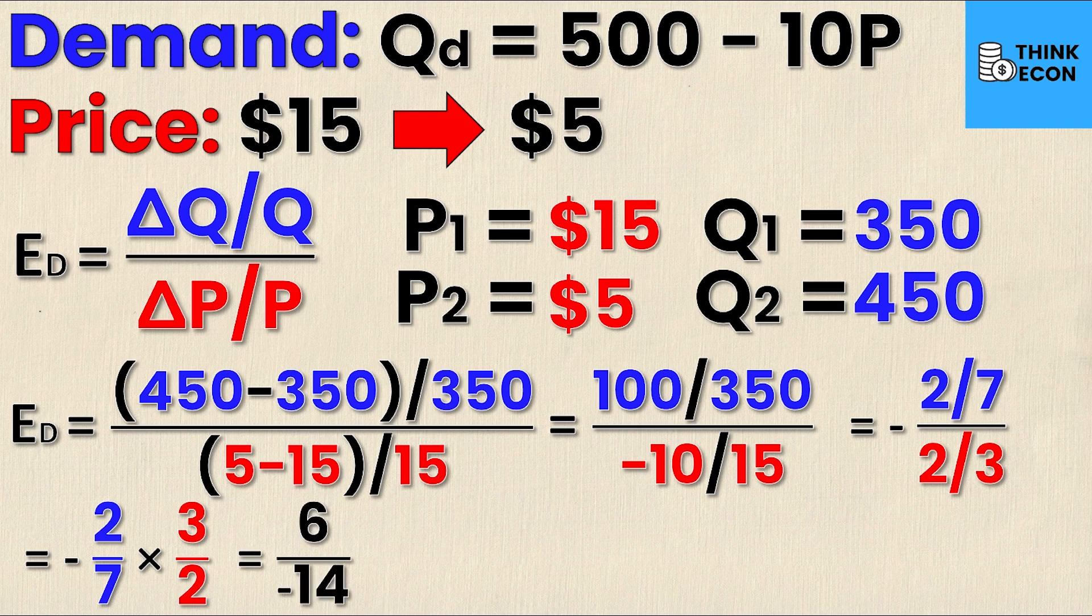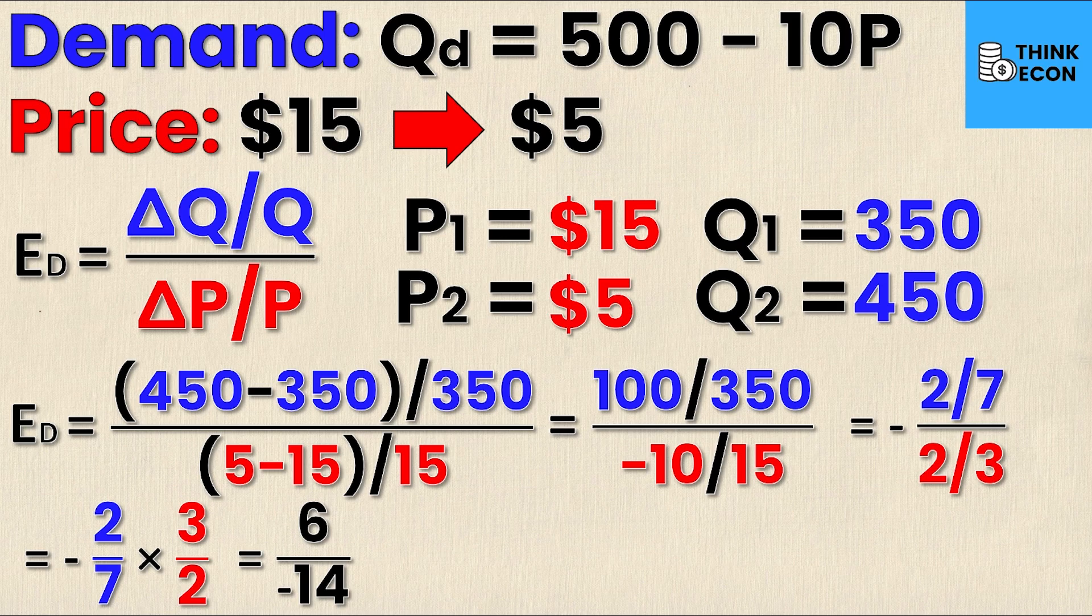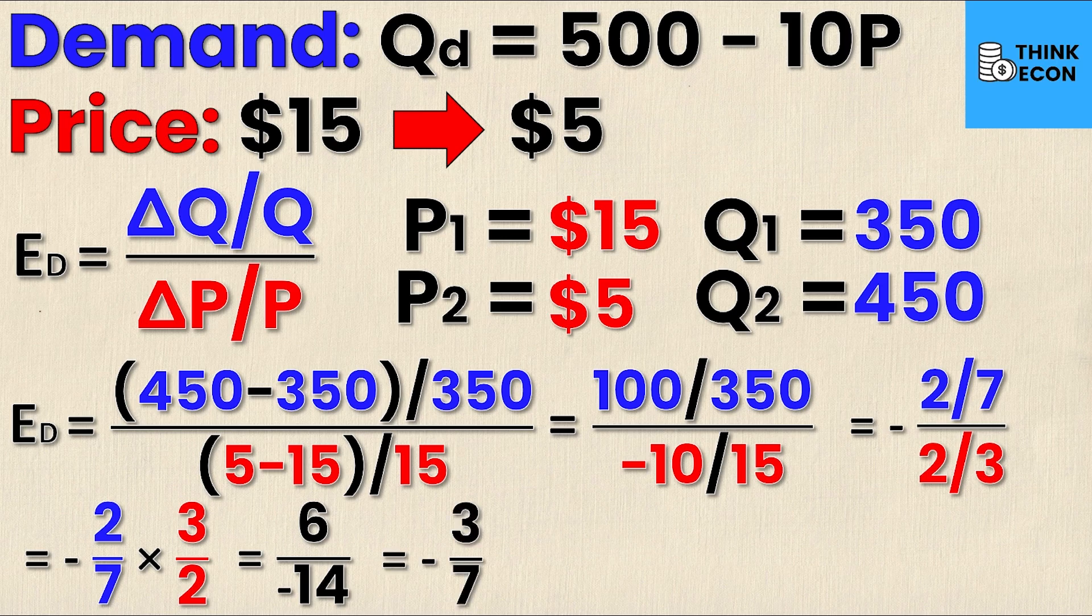Now if I do this I'm going to get six over negative 14. Again don't really overthink if that negative goes on the top or the bottom—you can have it out front, on the top, or the bottom. It doesn't change the fact that the fraction is negative. I'm going to reduce this one more time to give me negative three over seven, and that is my elasticity.